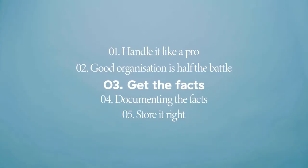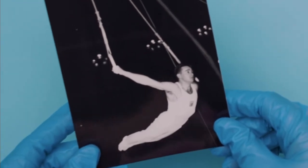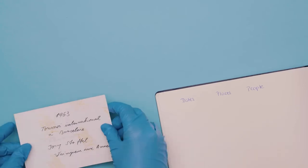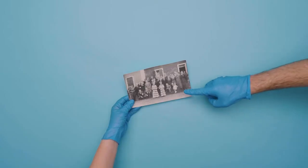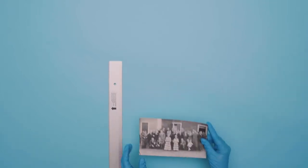Three. Get the facts. The next important step is to gather as much information as you can. Dates, places and people are always a good place to start. Get your family members involved. They might know facts about the document you are unaware of.